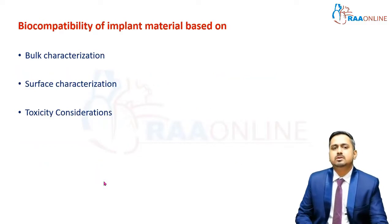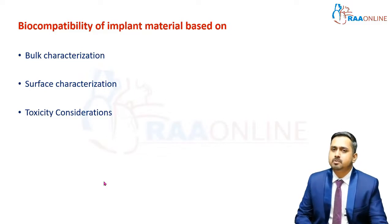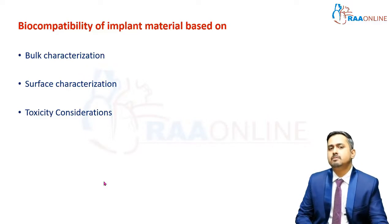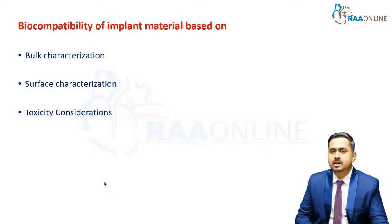Moving on to the biocompatibility aspects of implant materials. There are three sections: bulk characterization, surface properties, and toxicity considerations. While toxicity is of greatest importance, bulk characteristics and surface properties also play a vital role in the acceptance of implant materials by the human body, especially when placed inside the bone in the maxilla and mandible.